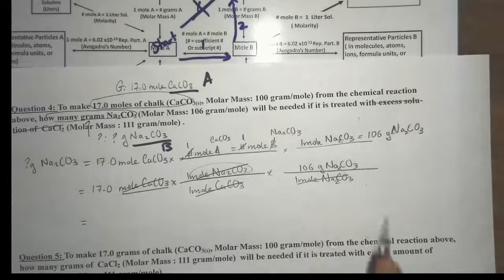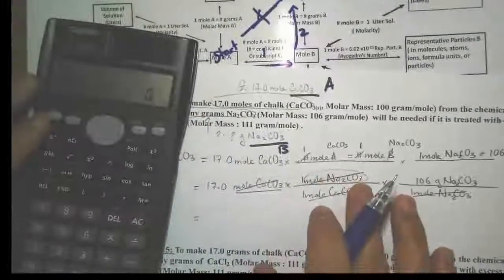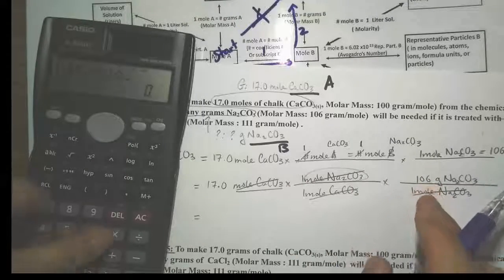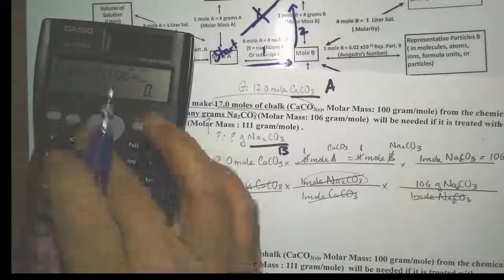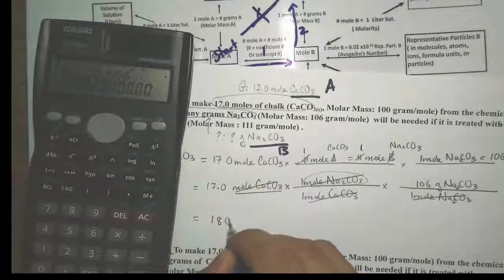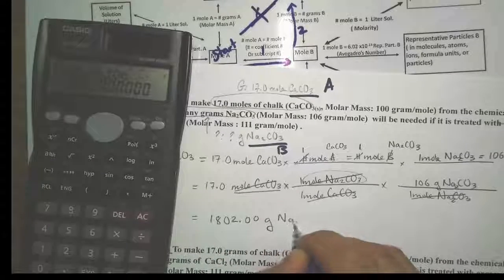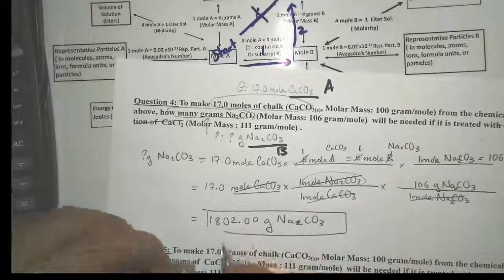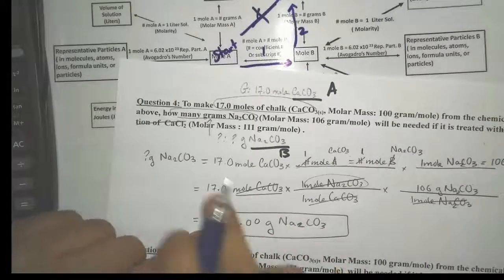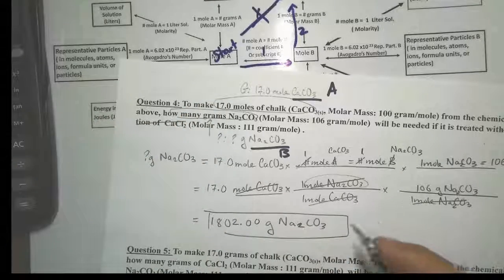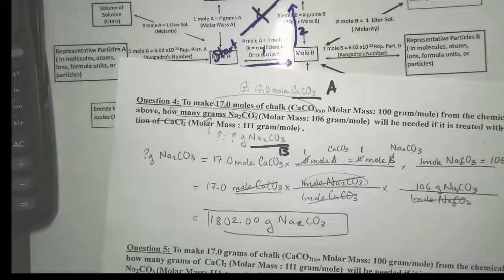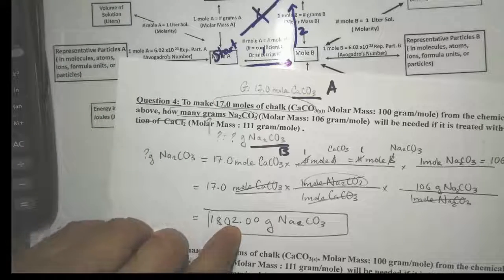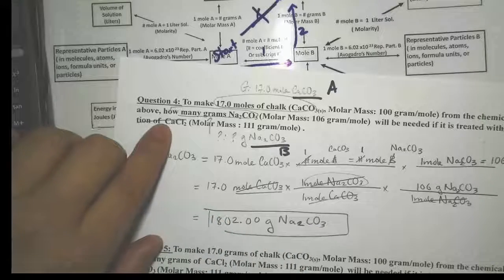Let's plug this into the calculator: 17.0 times 106 divided by 1, giving us 1802 grams of Na₂CO₃. So to make 17.0 moles of chalk, we need at least 1802 grams of sodium carbonate that will react with an excess amount of calcium chloride.